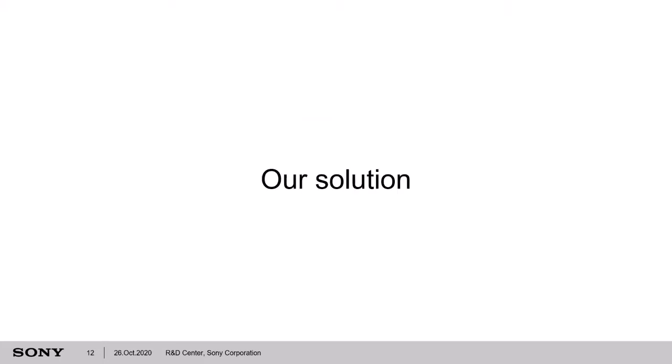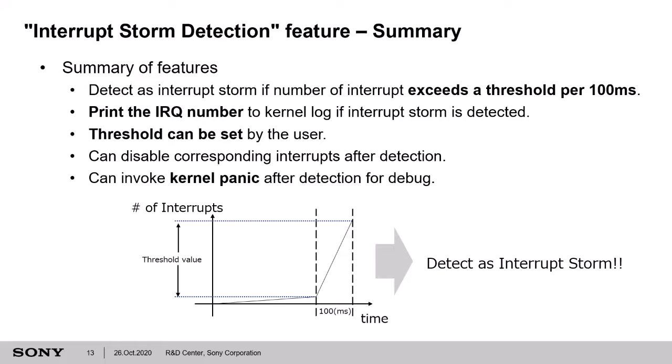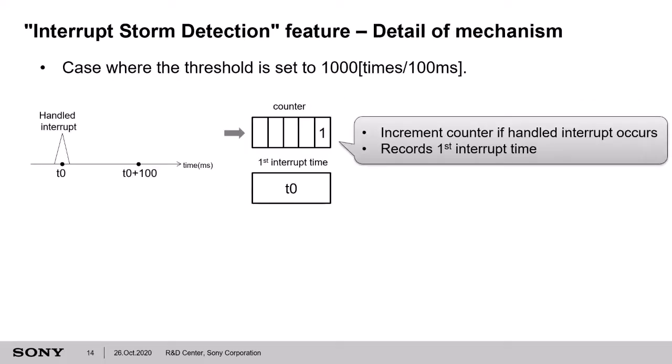Now I will talk about our solution — the Interrupt Storm Detection feature. This feature detects an interrupt storm if the number of interrupts exceeds a threshold per 100 ms, like this figure. If a high-frequency interrupt happens within this 100 ms window, it is detected as an interrupt storm. After detecting an interrupt storm, this feature will print the IRQ number to the kernel log. Now I will explain how it works in detail.